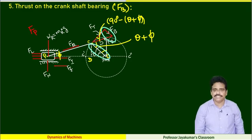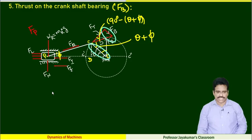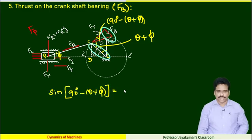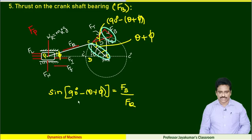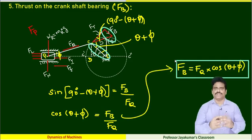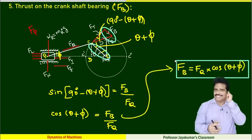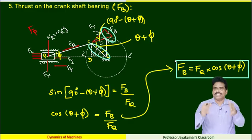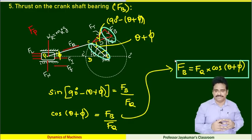We can get the answer for FB. I can write the opposite side FB divided by the hypotenuse FQ. From that, sin(90 − (theta + phi)) gives cos(theta + phi). This is the formula to find thrust acting on the crankshaft bearing FB.